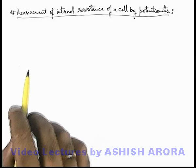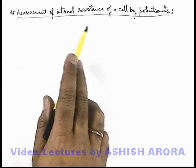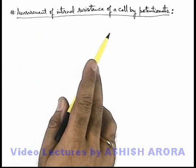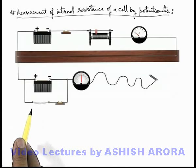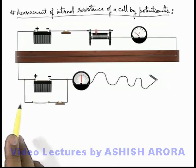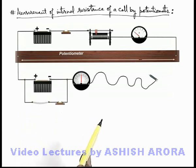Now let us study the experiment of measurement of internal resistance of a cell by using a potentiometer. Here you can see the experimental setup, in which, just for simplicity, we have taken the potentiometer wire to be a straight wire.